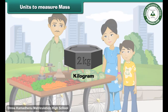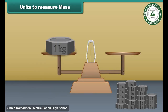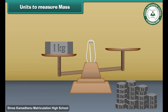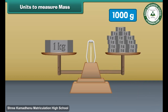Kilograms and grams are the two units used for measuring mass of substances, among which kilogram is the standard unit of mass. If 1 kilogram is divided into 1000 parts, then one part is called a gram. This means 1 kilogram is equal to 1000 grams.